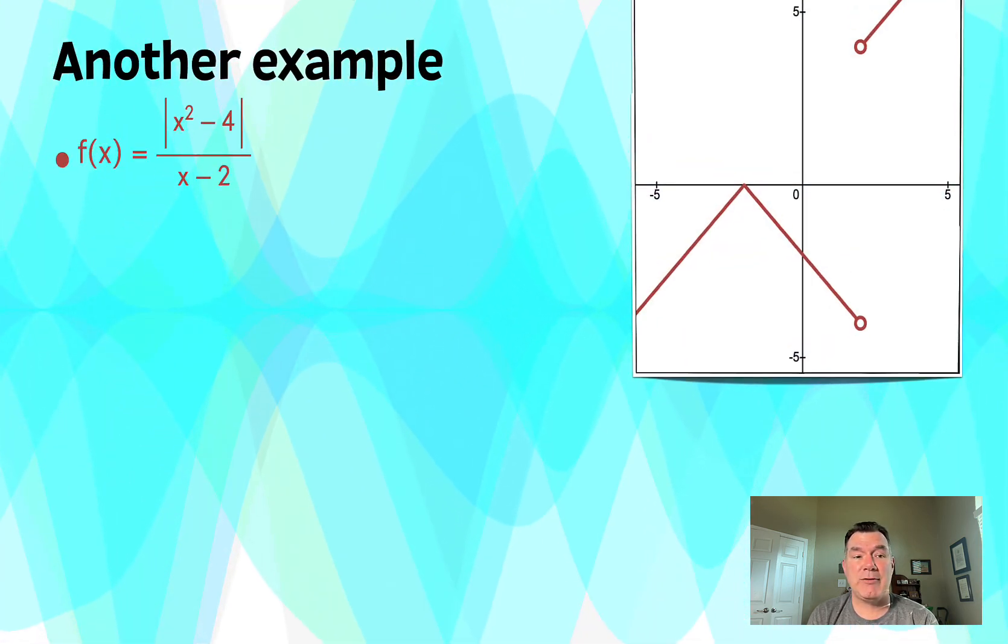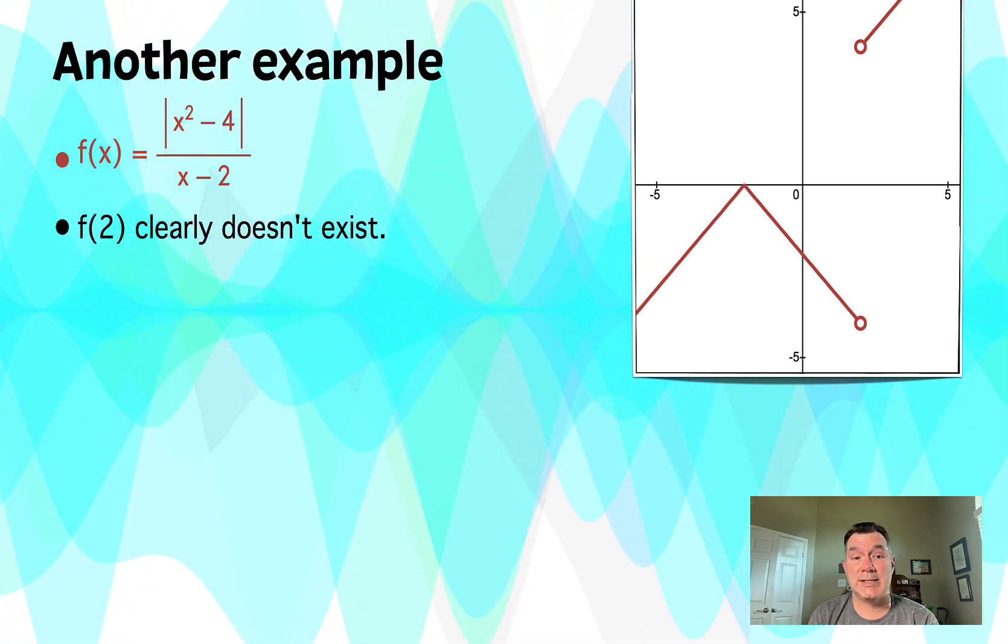I've got f(x) equaling the absolute value of (x² - 4)/(x - 2). This is a very different situation in some ways, but in the same way, f(2) in this case doesn't exist. And you can see that by trying to plug in x = 2. You get 0/0 again, which is indeterminate.